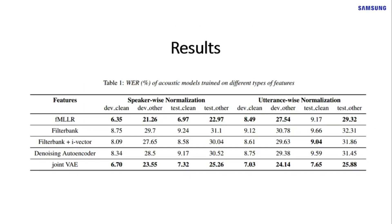Columns under speaker-wise normalization imply that at test time, FMLLR transforms, i-vectors, and the mean of features are estimated on a per-speaker basis, whereas utterance-wise normalization uses per-utterance estimation. The first row corresponds to the acoustic model trained and tested using FMLLR-normalized features, and can be seen as the upper bound for the scope of this paper.